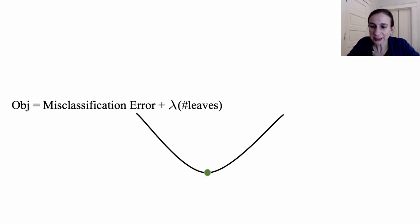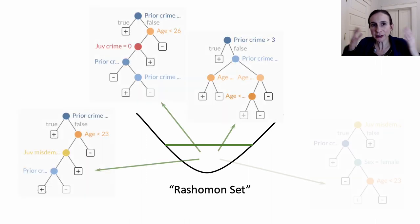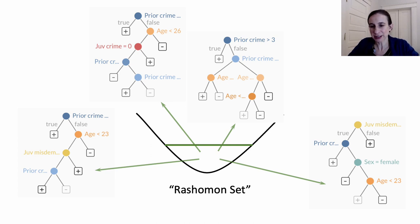Now we're interested in the set of decision tree models that have low objective values, where in our case the objective is the misclassification error plus a constant times the number of leaves in trees. And the set of good models is called the Rashomon set. All the trees in the Rashomon set are both accurate and sparse. The question is how do we get the Rashomon set for complex classes of models like decision trees? Finding even one optimal sparse tree can be hard, but finding all of the good sparse trees is even harder. And that's the question that we address in this work.